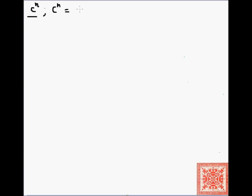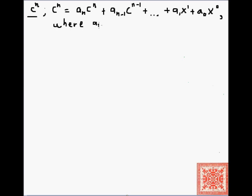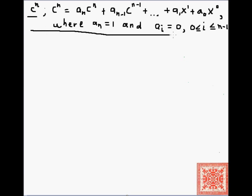We can write c to the n as a polynomial: a_n times c to the n, plus all the way down to a_0, where a_n is equal to 1 and everything else — all of the other coefficients — are zero. So we can rewrite c to the n like this, and we can ask ourselves: how about applying Horner's Rule?